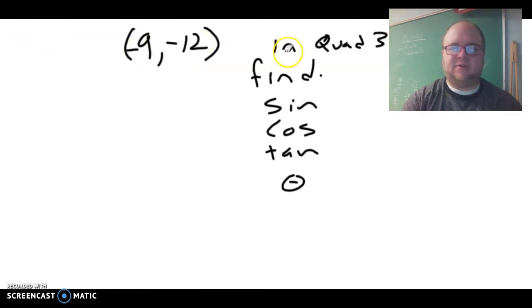I left the class off with a question that we'll solve next hour: an angle going through the point (-9,-12). Find what sine, cosine, and tangent values are, and then the angle that produces that. We'll see what answers you get next hour. Thanks for watching.